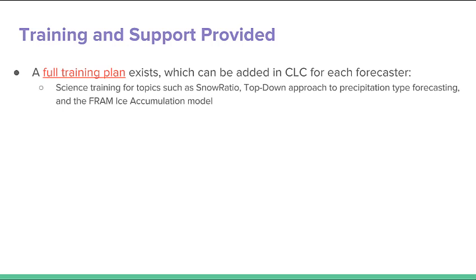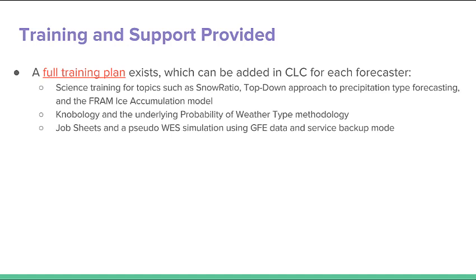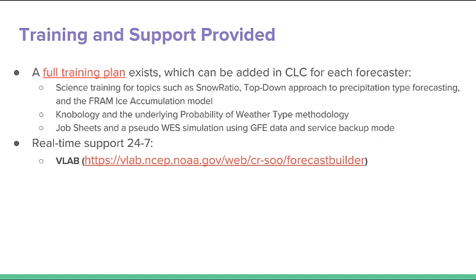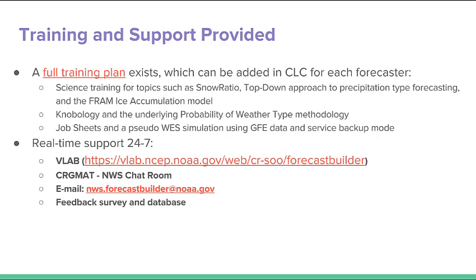There's a decent amount of training and support provided. There's a full training plan available on the CLC for each forecaster, covering science topics such as snow ratio, the top-down approach, and the FRAM ice accumulation model. There's also the underlying probability of weather type methodology leading to probability of precipitation types and non-precipitation types. Job sheets and a pseudo-AWIPS simulation using GFE data in service backup mode are also available. Real-time support 24/7 is available via the Forecast Builder VLAB site, the CRGMAT NWS chat room, a dedicated email address, a feedback survey, and your regional ROC NWS chat room for forecast collaboration assistance.